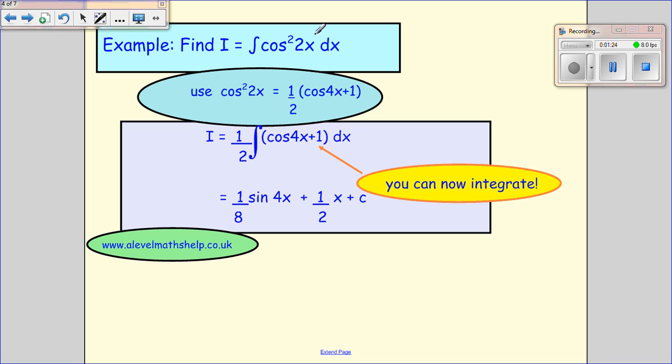And then we've got cos squared 2x. So this time we use these double angle formulas, where our x becomes 2x, and then 2 times x becomes 2 times 2x, which becomes 4x. So we substitute that into there, and again, this is something I can integrate.